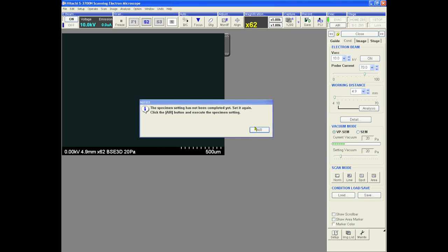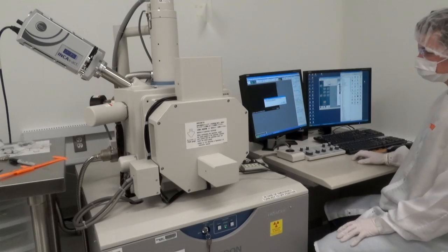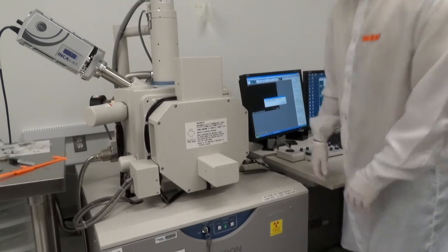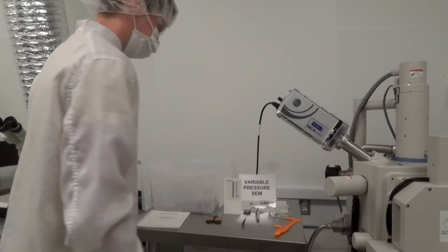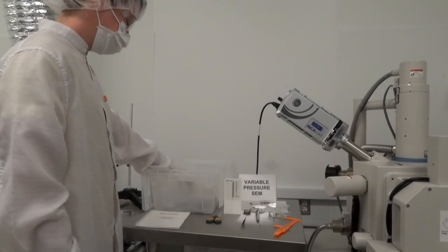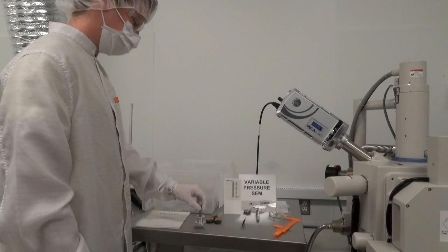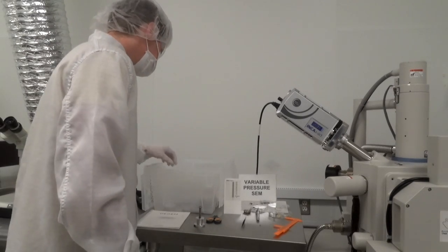While the chamber is venting, we will mount our sample onto the stage holder. A single stage holder is available at the SEM station for general public use. There are varying sizes of stages. Choose the stage that is closest in size to your sample and attach the stage to the top of the stage holder.